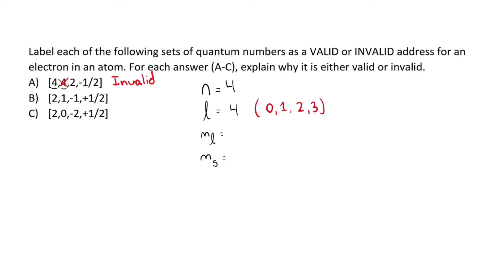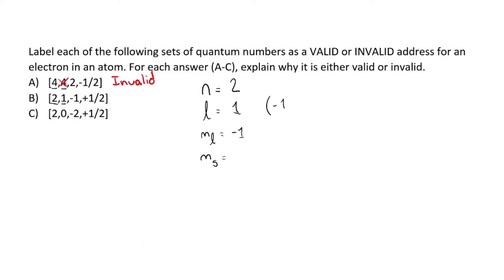Let's look at the next one. The shell is two — that works. Then the subshell, or angular momentum quantum number, is one — that also works. Then we look at the magnetic quantum number, which is negative one, and that works because under subshell one we can have negative one, zero, or plus one.